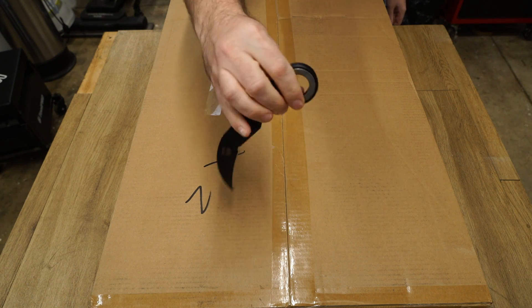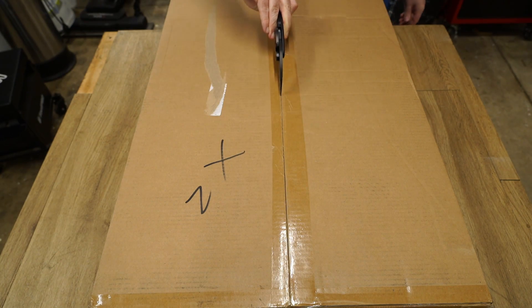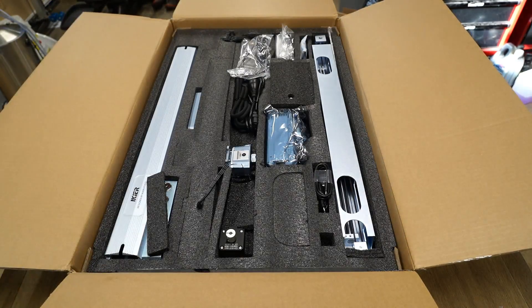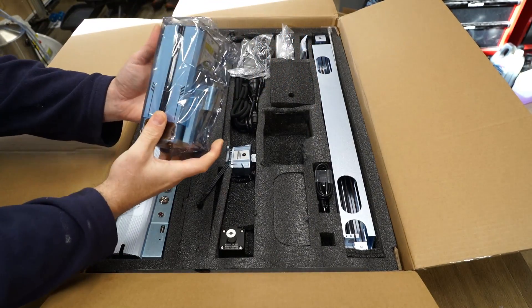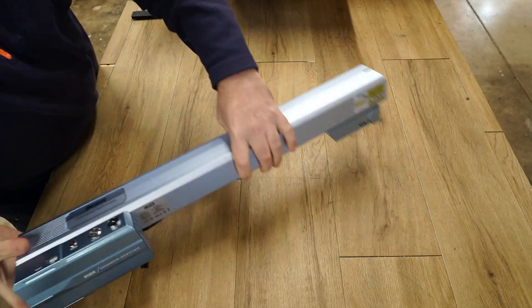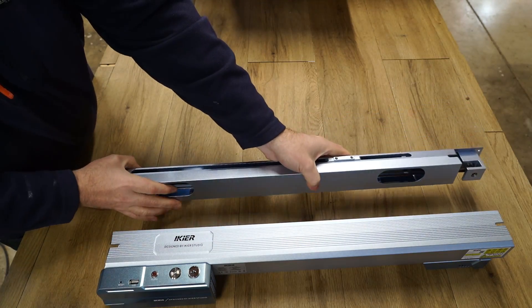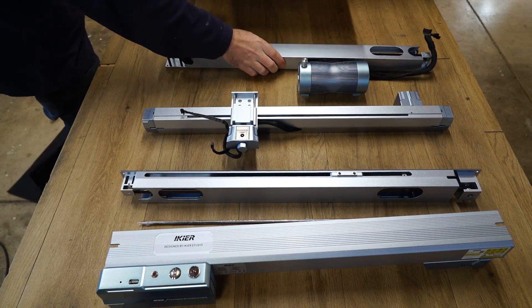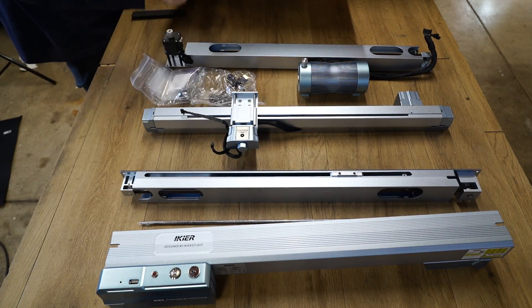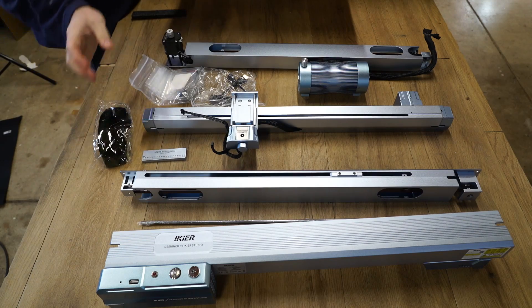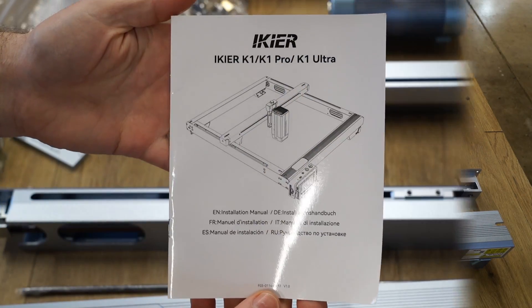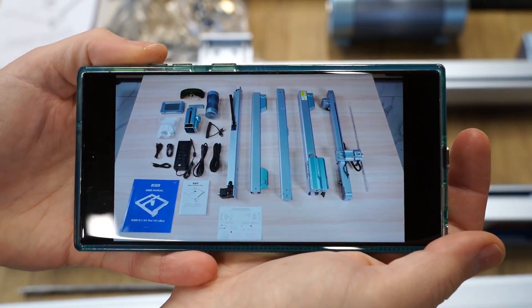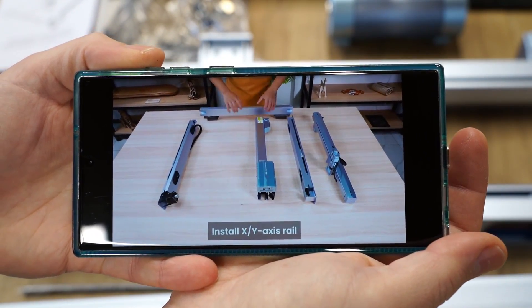Let's begin by unboxing. As with all my product reviews no money has changed hands and I'm not obligated to say anything. Inside the instruction manual is a QR code which takes you to an instructional assembly video. The video covers all the necessary steps to assemble the machine.